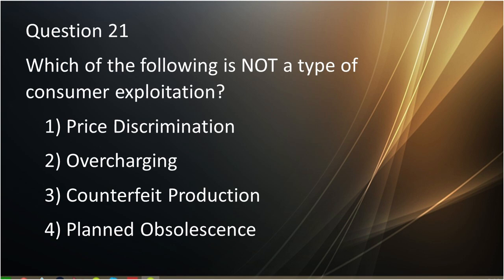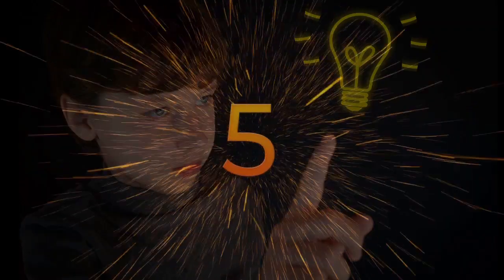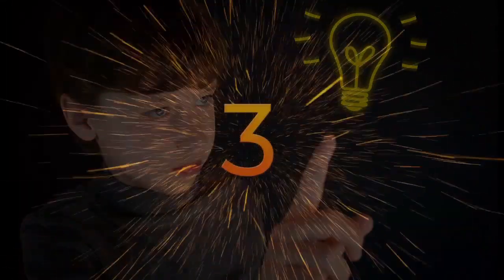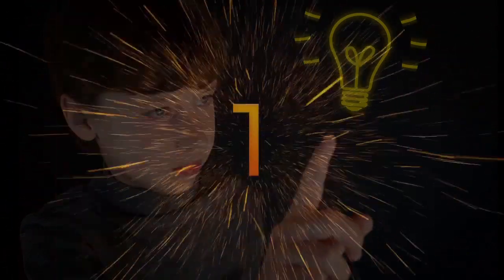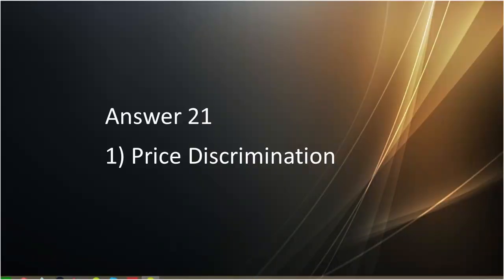Question number twenty-one: Which of the following is not a type of consumer exploitation? First is price discrimination. Second is overcharging. Third is counterfeit production. Fourth is planned obliteration. Answer to question number twenty-one is price discrimination.